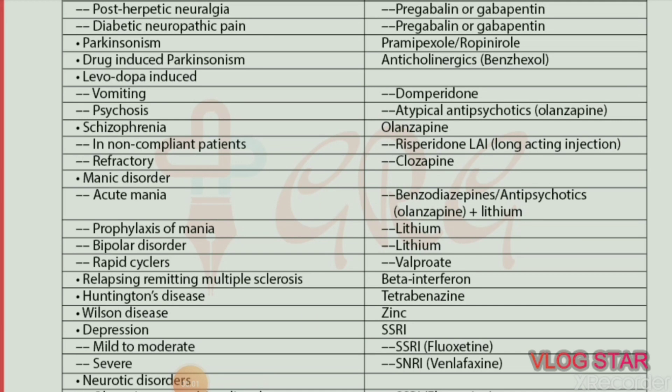Parkinsonism — drug of choice is pramipexole or ropinirole. Drug-induced Parkinsonism — drug of choice is anticholinergics, specifically benzhexol. Levodopa-induced vomiting — drug of choice is domperidone.